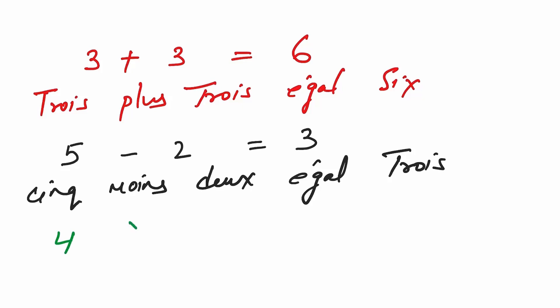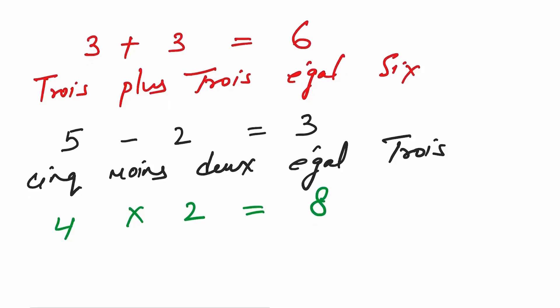Let's see the third one now. Four into two, four multiplied by two is equal to the answer is eight, and in French: quatre fois deux égale huit.